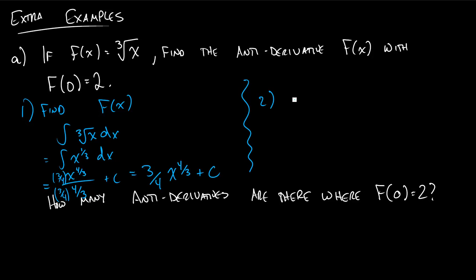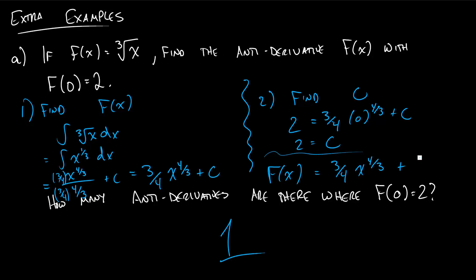Step 2 is find c. We know that if I plug in 0 into my formula, I get 2. So 3 quarters times 0 to the 4 thirds plus c equals 2. From this one, this one's really easy, 2 equals c. So my final antiderivative, just a single antiderivative here, is 3 quarters x to the 4 thirds plus 2.